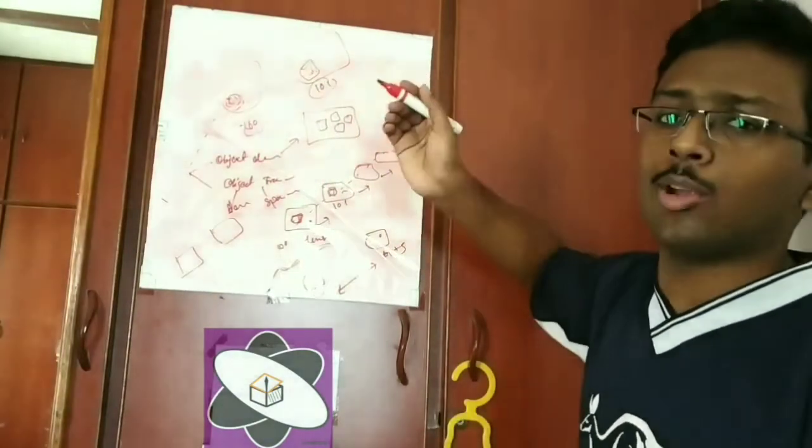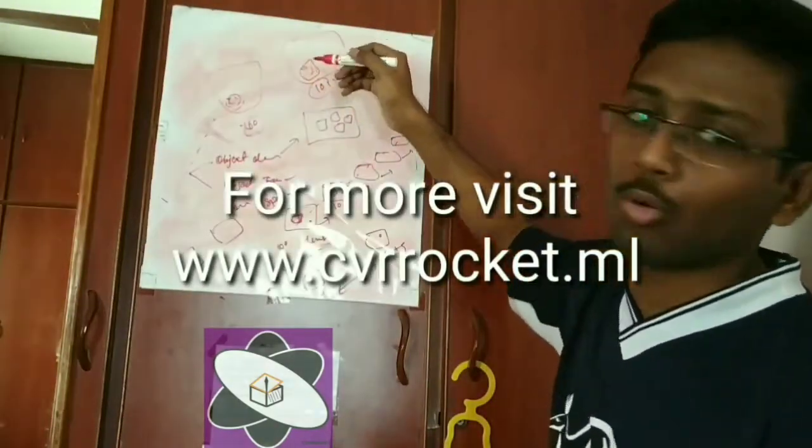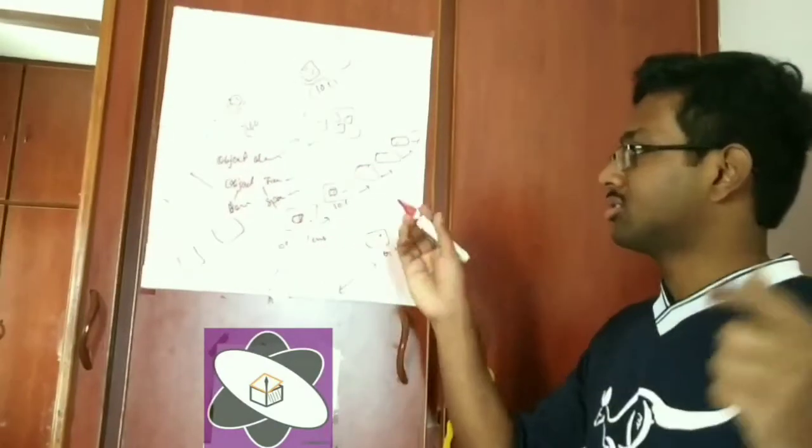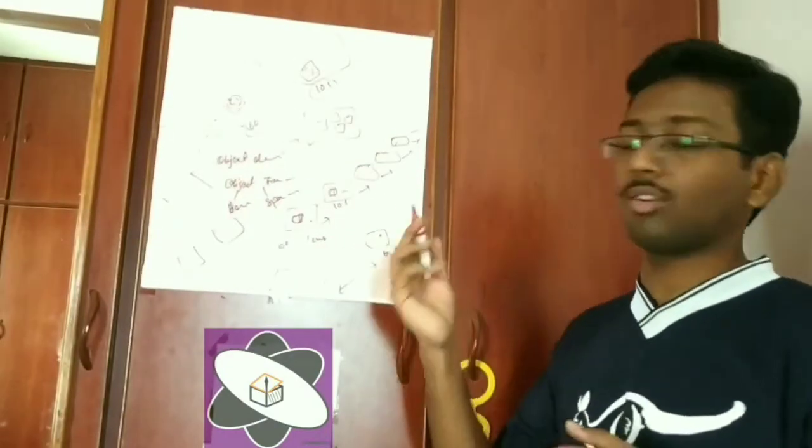But after reaching some certain states, say suppose 100 and 101, we can accurately or close to accurately say that our hand can be found in this certain boundary which we have framed. So that was the small differences which I want to give regarding object tracking and object detection.